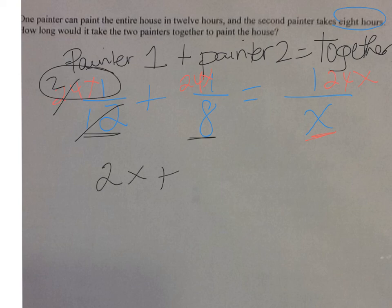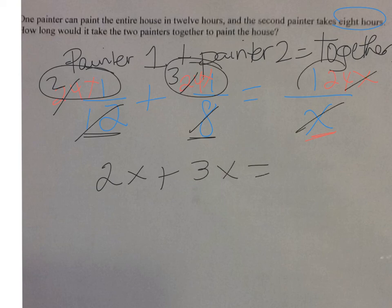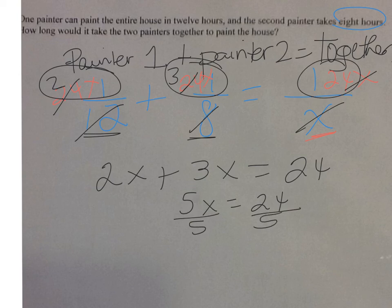Plus. 8 and 24 reduced to 3 and 1. So I'm left with plus 3X. Is equal to X and X reduced. So I'm left with 24. So 5X is equal to 24. Divide both sides by 5. I get X is equal to 4.8. So it will take 4.8 hours for them to paint the house together.